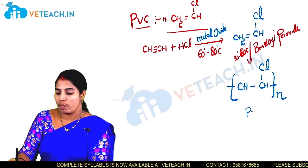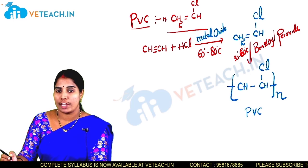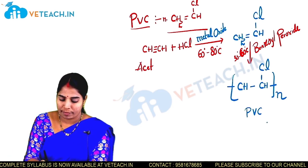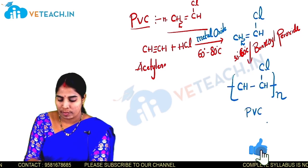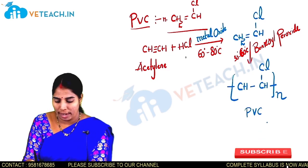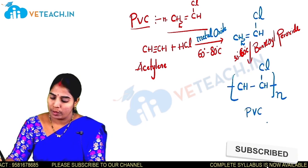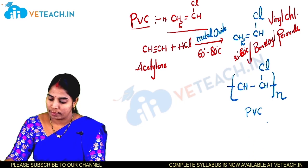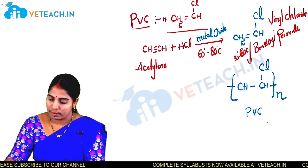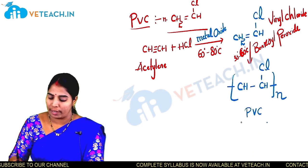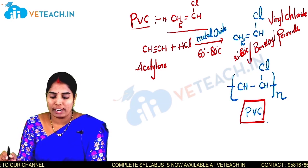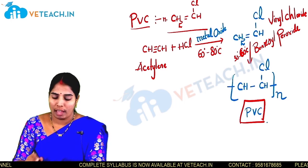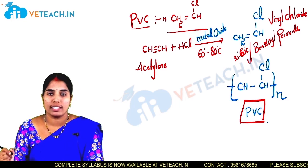In summary, CH triple bond CH (acetylene) is treated with hydrogen chloride to get vinyl chloride, which undergoes polymerization to give PVC. The monomers required are acetylene and hydrogen chloride, and the final product is polyvinyl chloride.